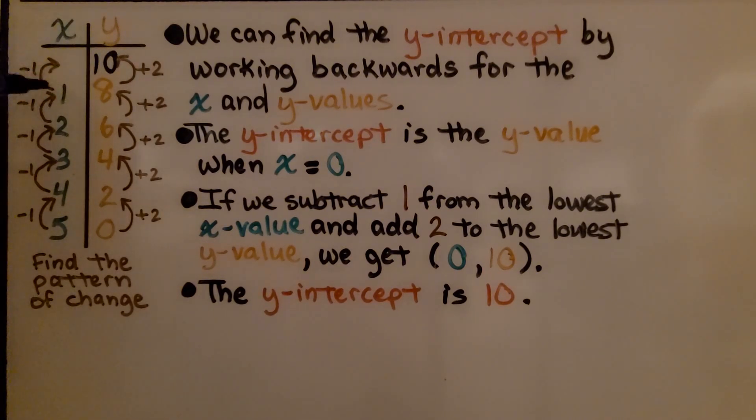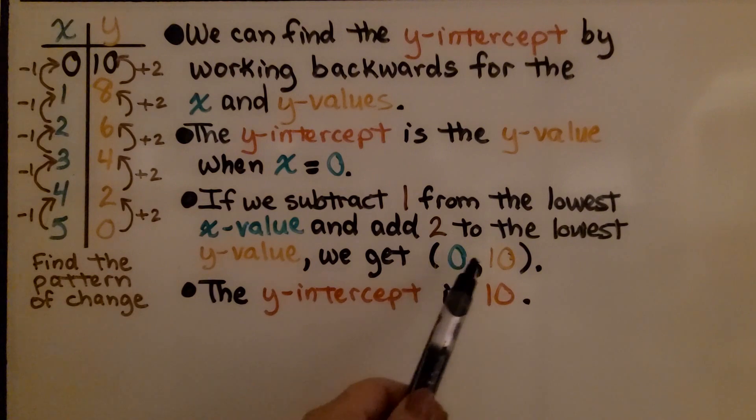If we subtract 1 from 1, we're going to have 0. Now x equals 0 and y equals 10. We know that the y-intercept is 10. If we subtract 1 from the lowest x value and add 2 to the y value, we get the ordered pair (0, 10).